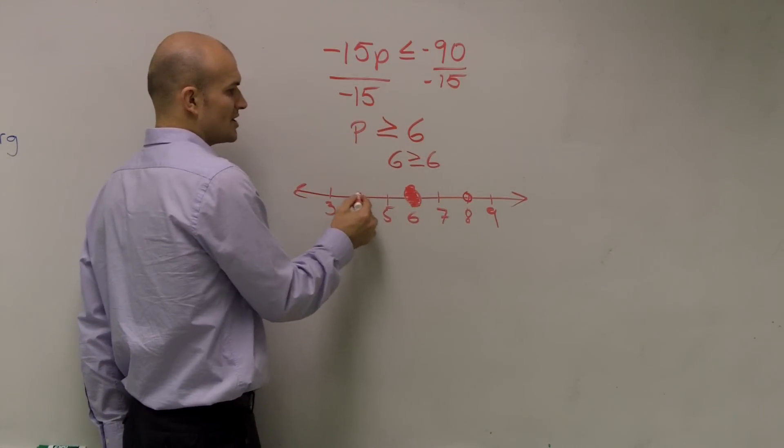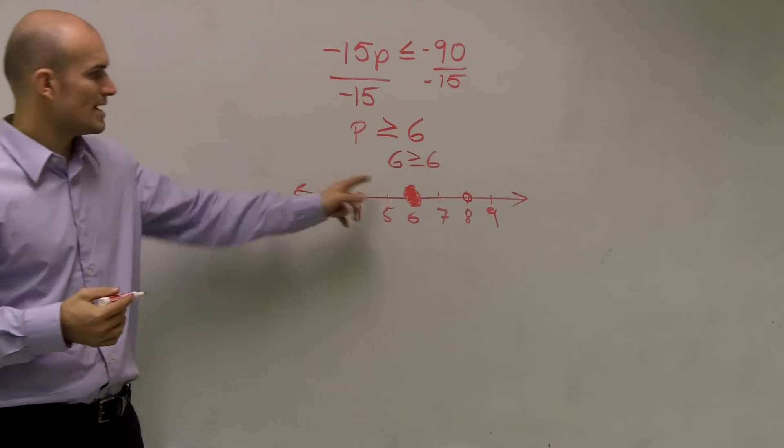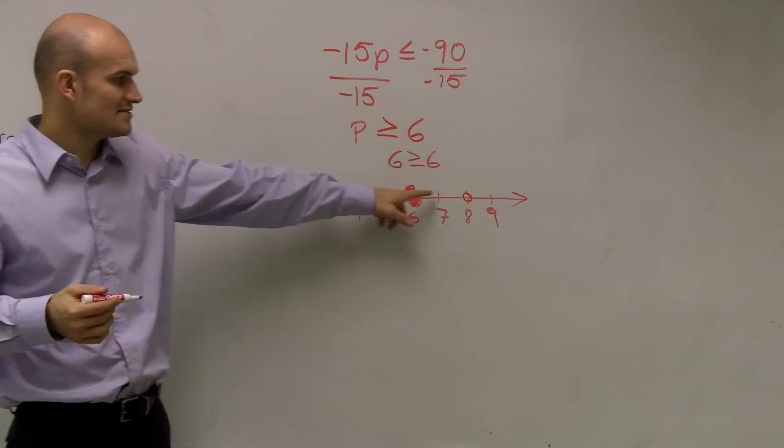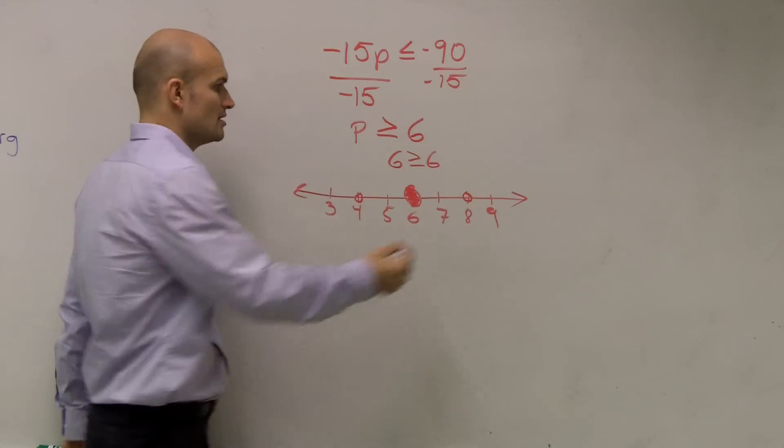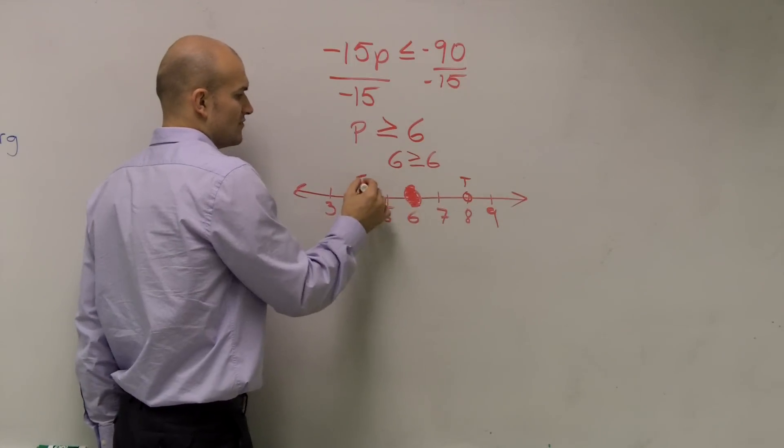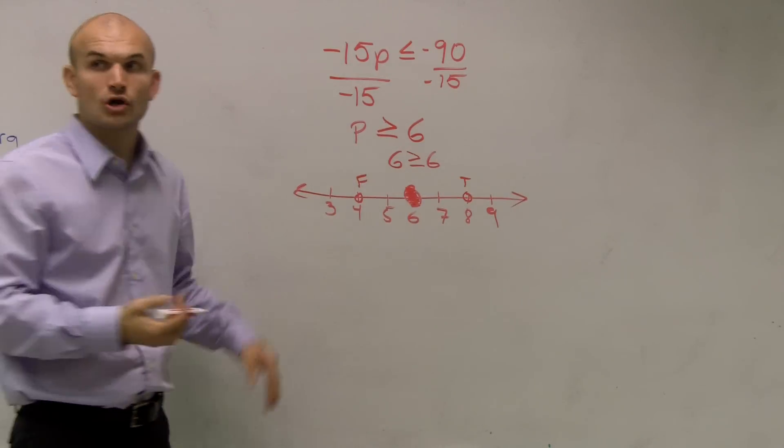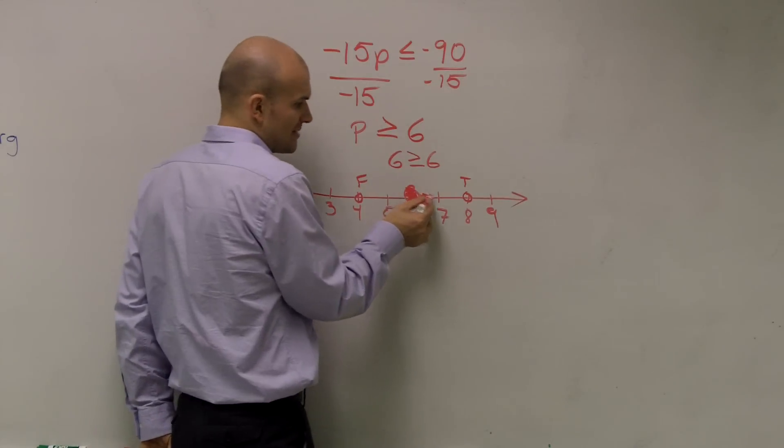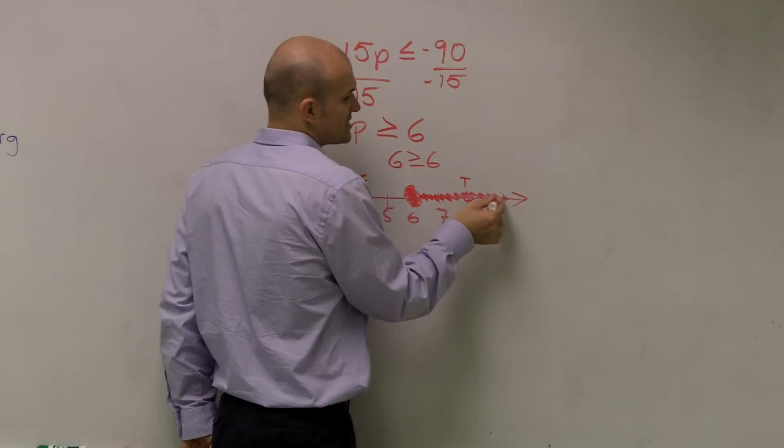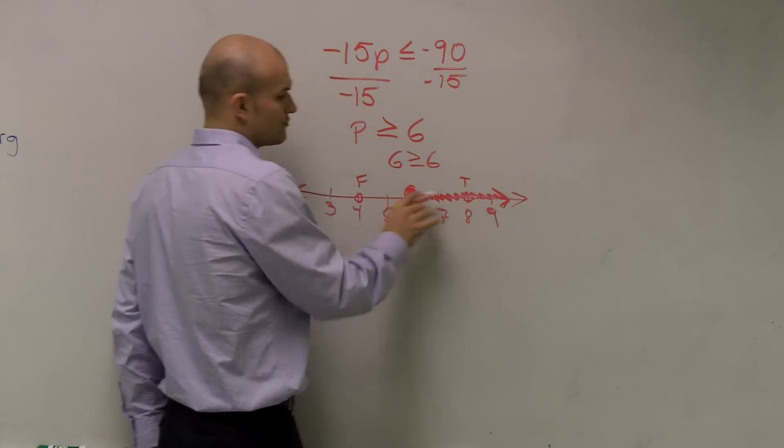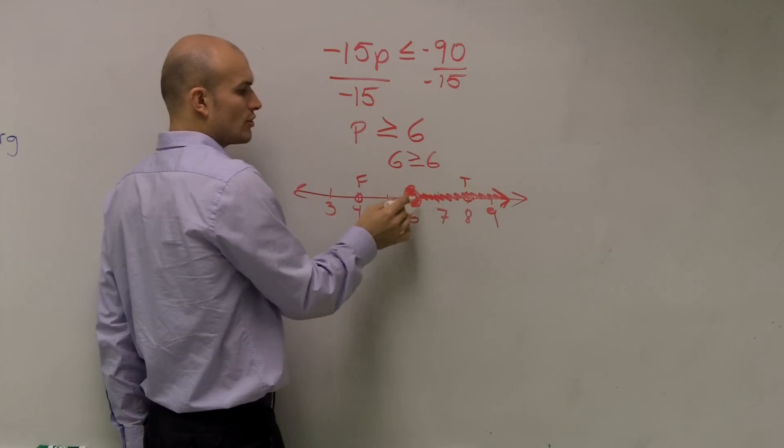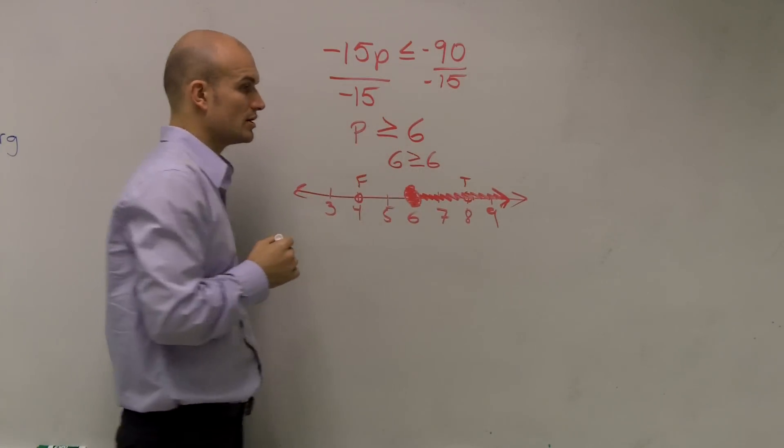So I look at two points. Is 7... I'm sorry, is 8 or 4 greater than or equal to 6? And you can honestly say 8 is greater than or equal to 6. That's your true statement. That's your false statement. And we need to get in the habit of always shading towards our true statements. So what that represents is all numbers to the right of 6, and 6 itself, make our inequality true.